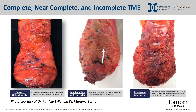These gross specimens illustrate and contrast the appearance of a complete and incomplete TME. One can readily appreciate the full thickness defects of the incomplete specimen as compared to the complete specimen, with multiple areas of visible muscularis propria. Further, the mesorectal border is no longer smooth and regular in appearance.